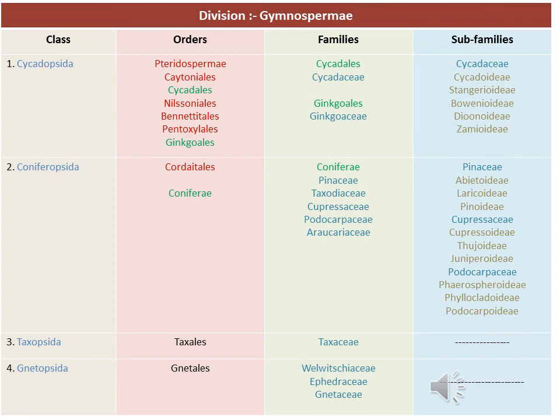Pinaceae has sub-families Abietoideae, Laricoideae, and Pinoideae. Cupressaceae family has sub-families Cupressoideae, Thujoideae, and Juniperoideae. Podocarpaceae also has sub-families Pherospheroideae, Phyllocladoideae, and Podocarpioideae. Taxopsida class has one order, Taxales, with family Taxaceae. Gnetopsida has one order, Gnetales, and three families: Welwitschiaceae, Ephedraceae, and Gnetaceae.